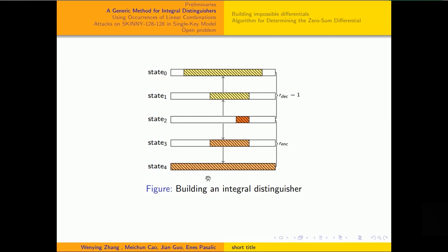This figure illustrates the process of building an integral distinguisher. Let's start from state two. We encrypt it until it achieves full diffusion and we decrypt it until there is at least one word independent of it. Hence, we get an (Rdec-1 plus Renc) round integral distinguisher.